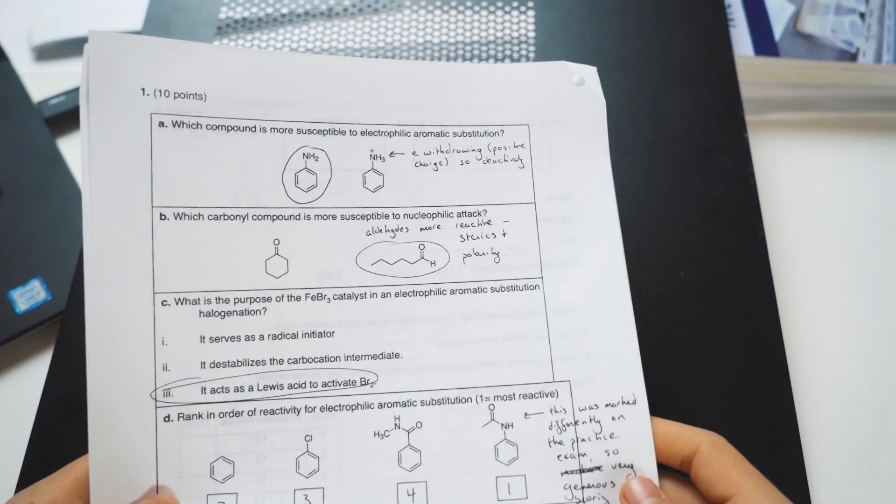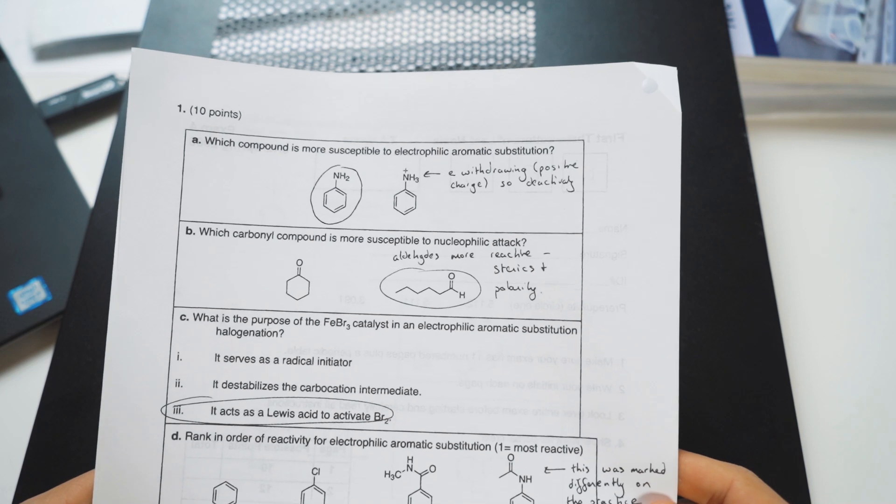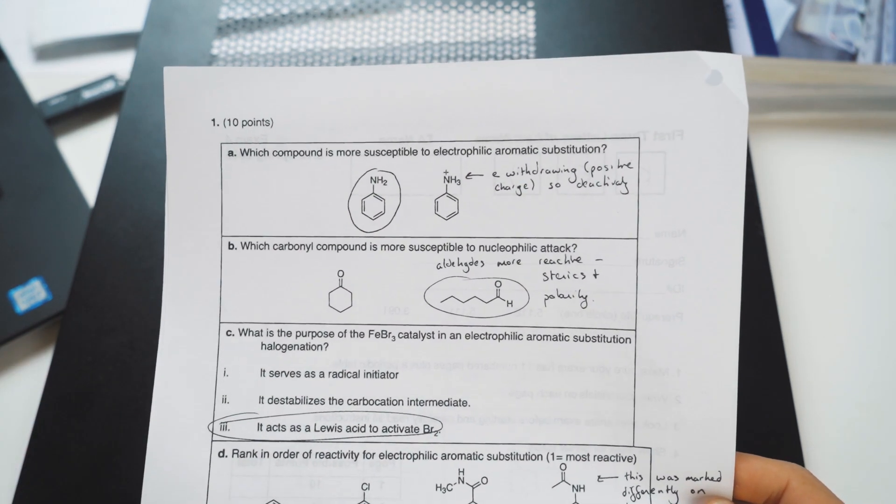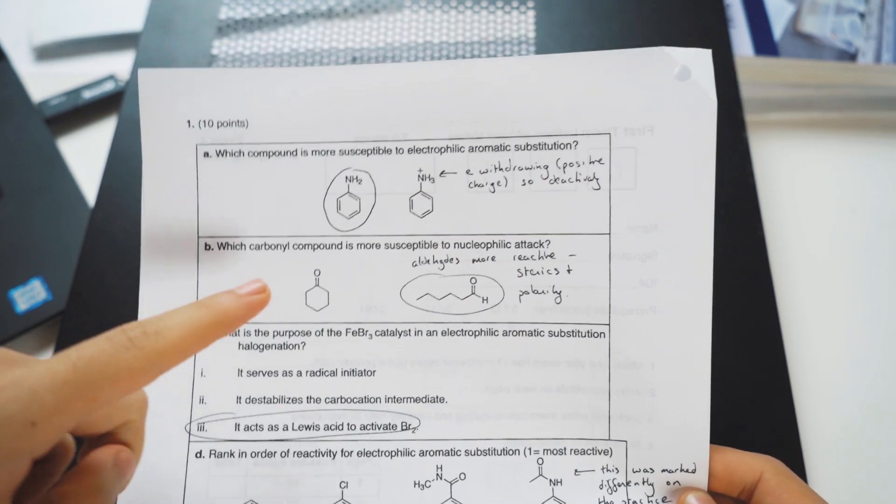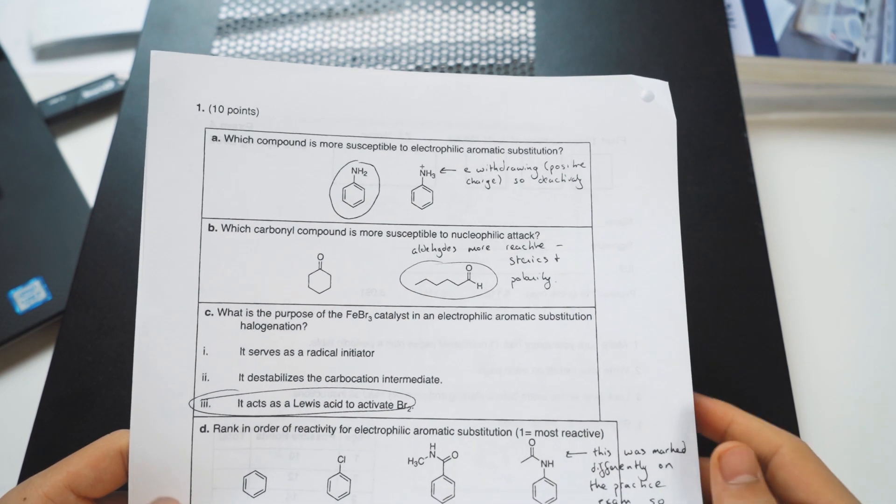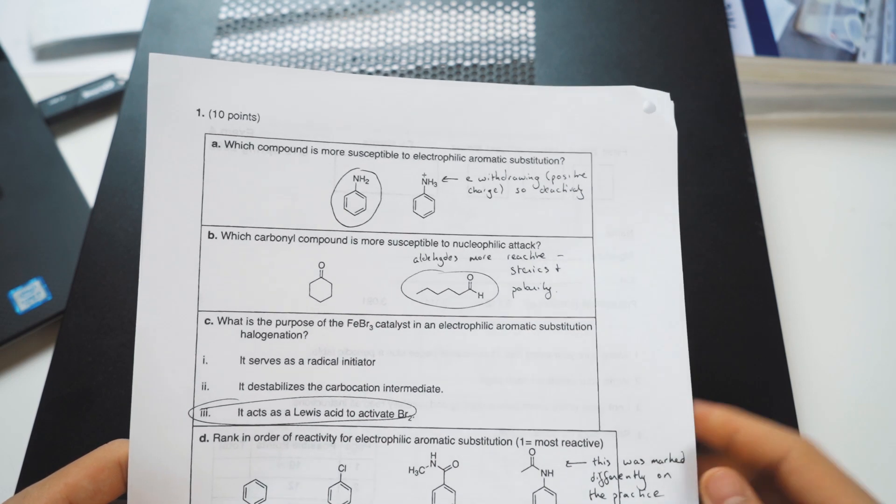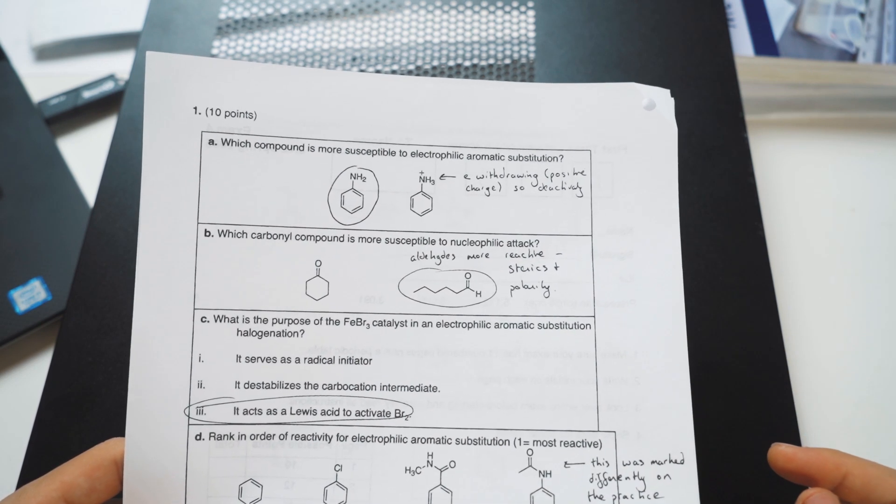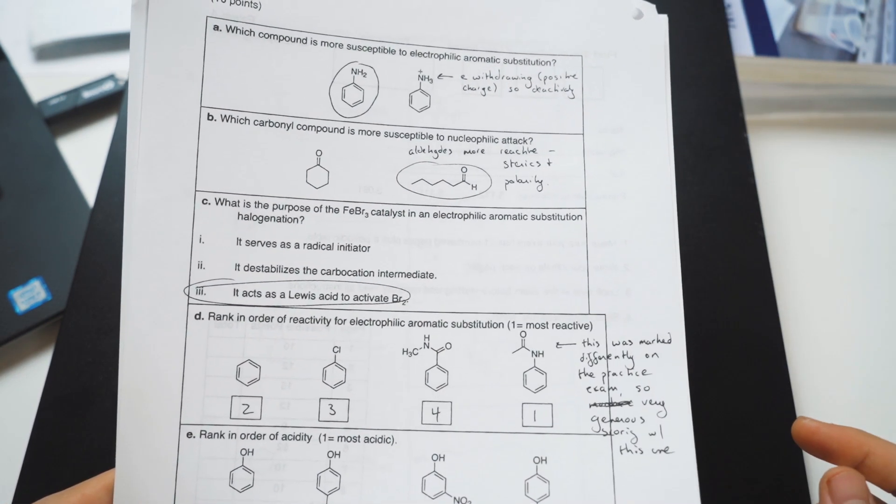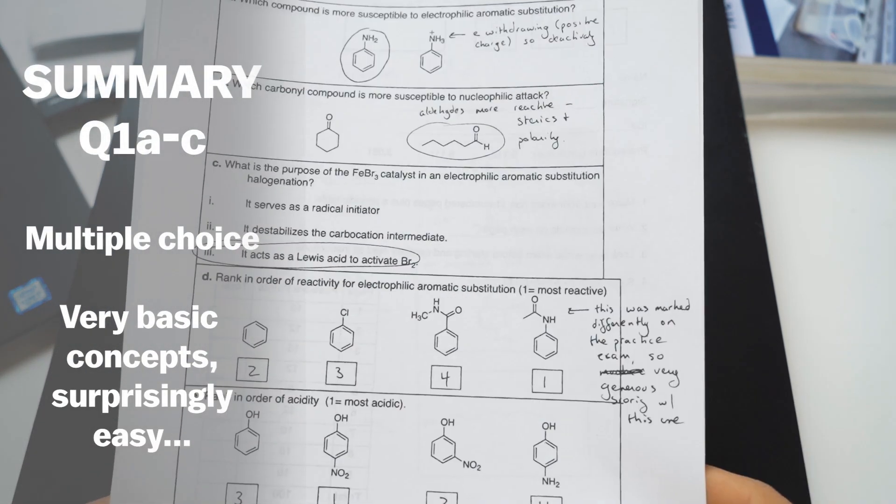Okay, first couple problems are multiple choice. It requires you to understand which one is more activating and deactivating, which is pretty standard for Orgo 1 - we would have questions similar to this. Now one thing is we did go over carbonyl chemistry in Orgo 2, so it looks like they did switch the order of the type of reactions compared to what certain colleges might be used to. But having taken Orgo 2, aldehydes are a lot more reactive than ketones and that's something you learned in the beginning. Understanding the mechanism of the FeBr3 catalyst reaction and you know that it splits the Br2, that's not too hard.